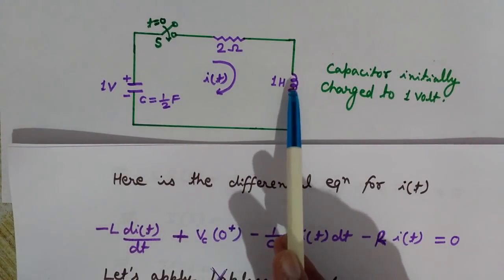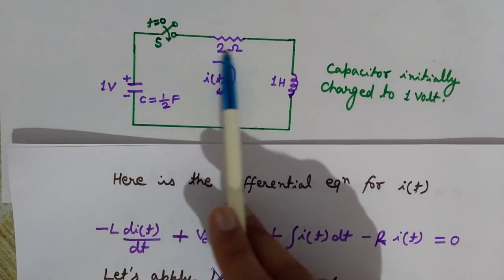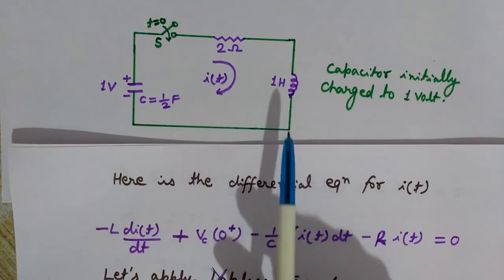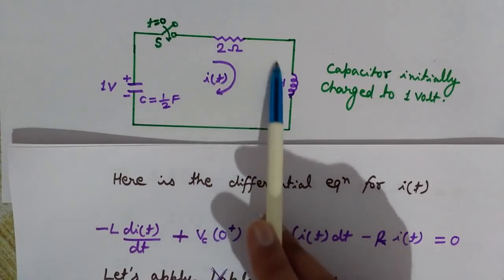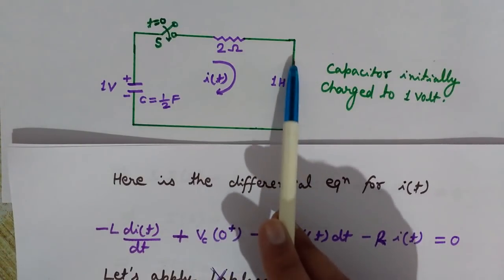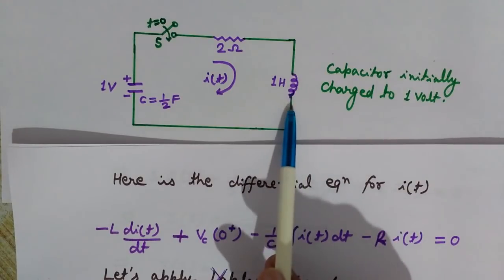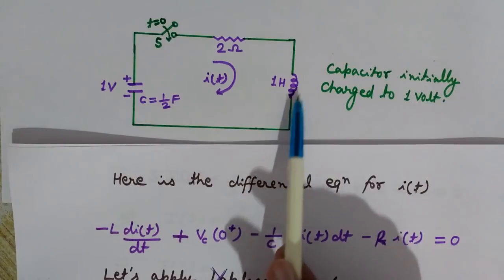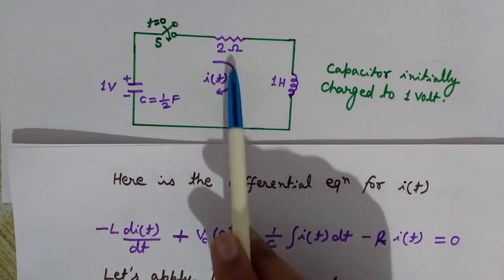We will add up the potentials across each element. We are taking the clockwise direction, in the direction of current, as current flows from higher voltage to lower voltage. If we consider this clockwise direction and take the inductor first — current is flowing downward, so higher voltage is at the top and lower voltage is at the bottom. The potential difference is final minus initial, so lower minus higher gives a negative potential.